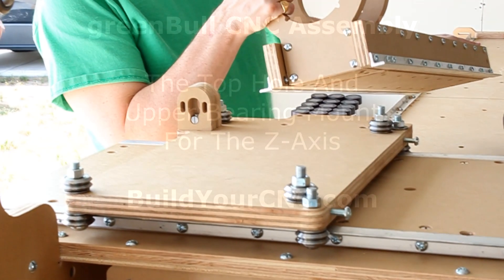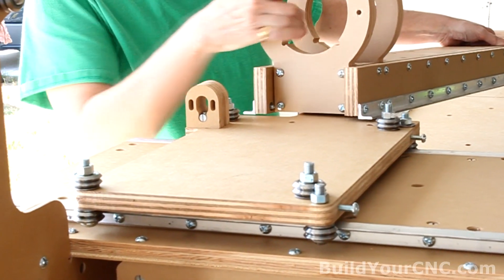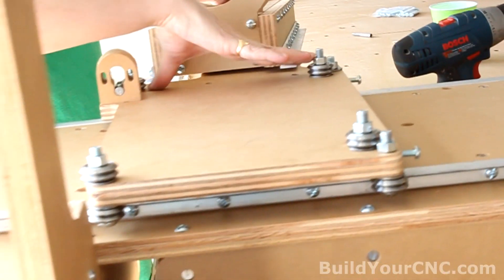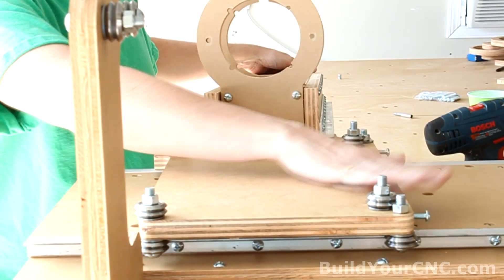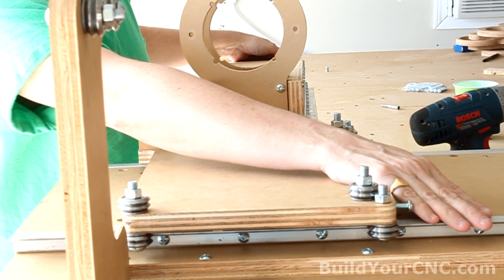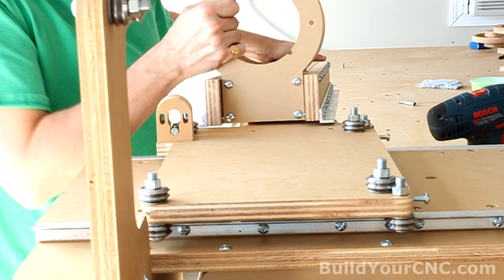Now we can take this assembly and put it between the V-groove bearings for the Z-axis, and those are the bearings that are shown here. We have the gantry like this when we were putting the Y-axis on, it's a convenient position to put this on as well.